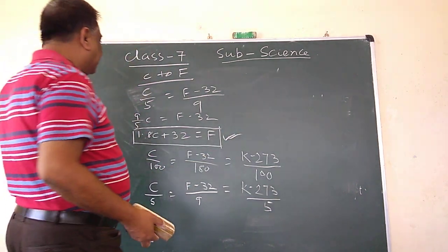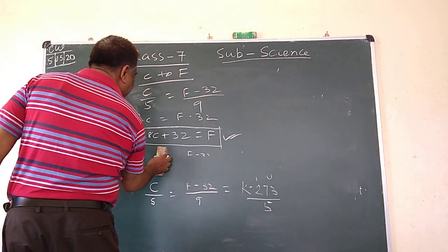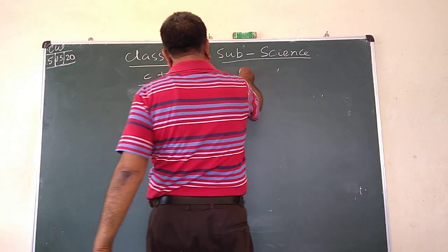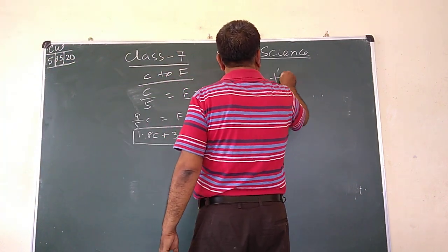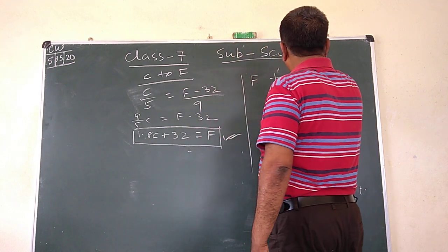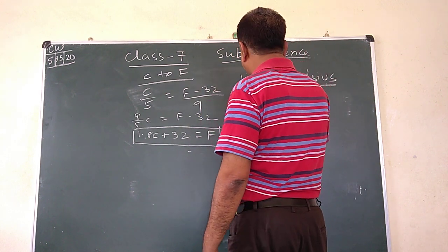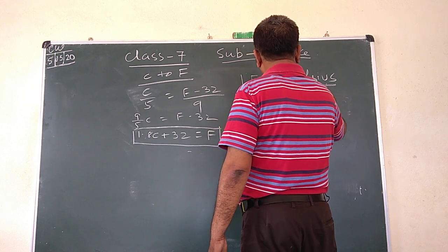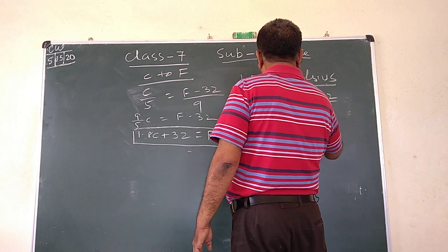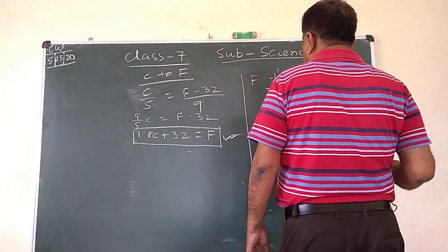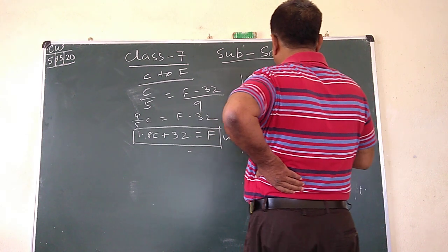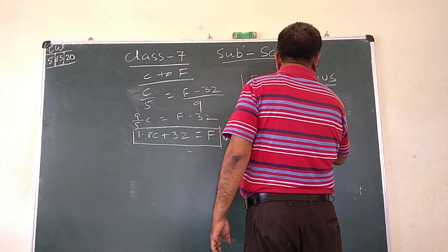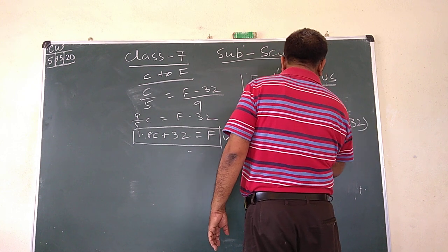To convert Fahrenheit to Celsius, using C by 5 equals F minus 32 by 9, Celsius equals 5 by 9 times (F minus 32). This is the required formula for Fahrenheit to Celsius conversion.